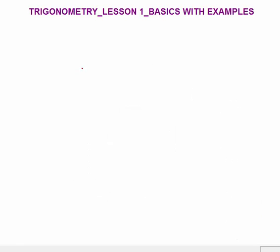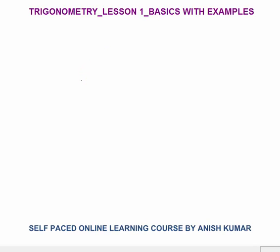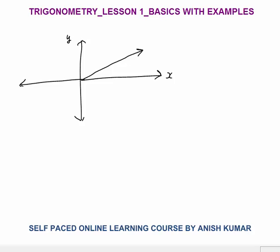Now I will discuss positive and negative angles. Let's say this is the x-axis and this is the y-axis. If a ray makes some angle with the x-axis in the anticlockwise direction, that angle is always considered positive. So if this angle is 60°, you can say it is plus 60 degrees.